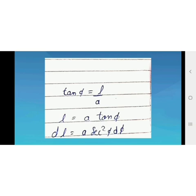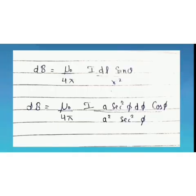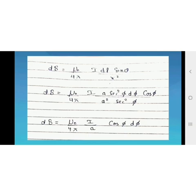Now we substitute all values into the Biot-Savart formula. dB = μ₀/4π · I dL sin θ / R². Putting dL = A sec² φ dφ, sin θ = cos φ, and R² = A² sec² φ: the sec² terms cancel, and A cancels with A², giving dB = μ₀/4π · I cos φ dφ / A.